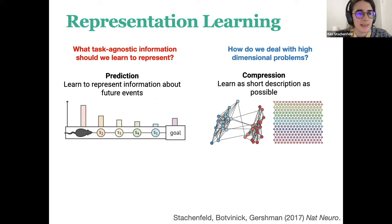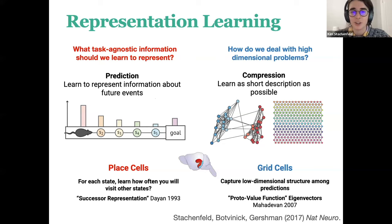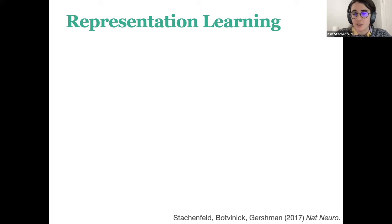I'm going to talk about work building on work we started in 2017. We hypothesized that the hippocampal circuit — place cells in hippocampus and grid cells in entorhinal cortex — were helping serve a representational purpose. Place cells represent information about how states predict each other, how locations in your environment can lead to each other. Grid cells form a compressed representation of that, useful for identifying commonalities across states. I'll illustrate the basic gist of this model, then talk about later work, and at the end move on to some neural network stuff.